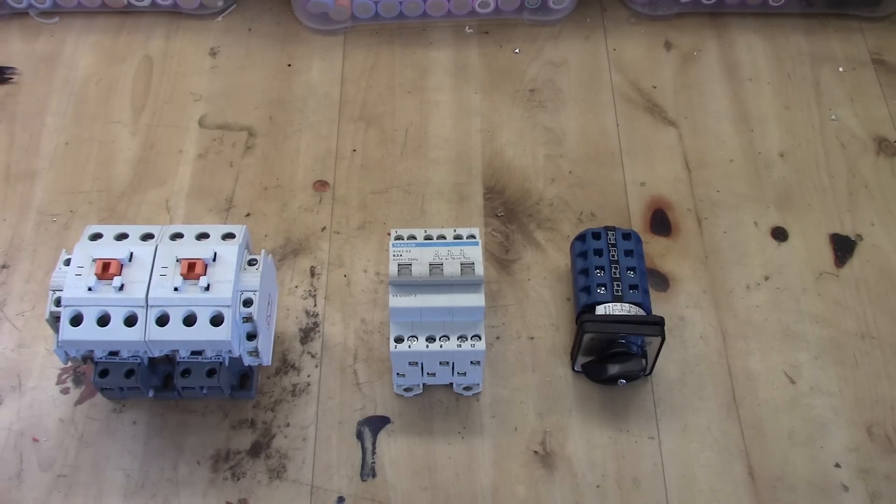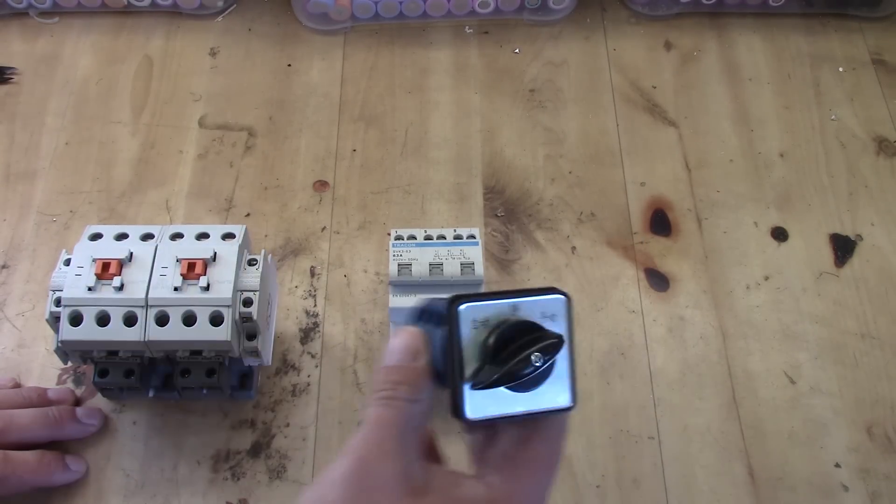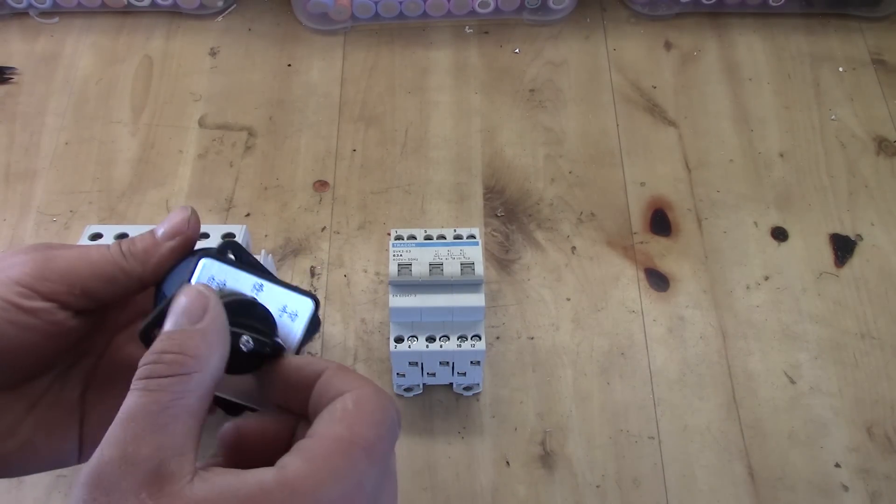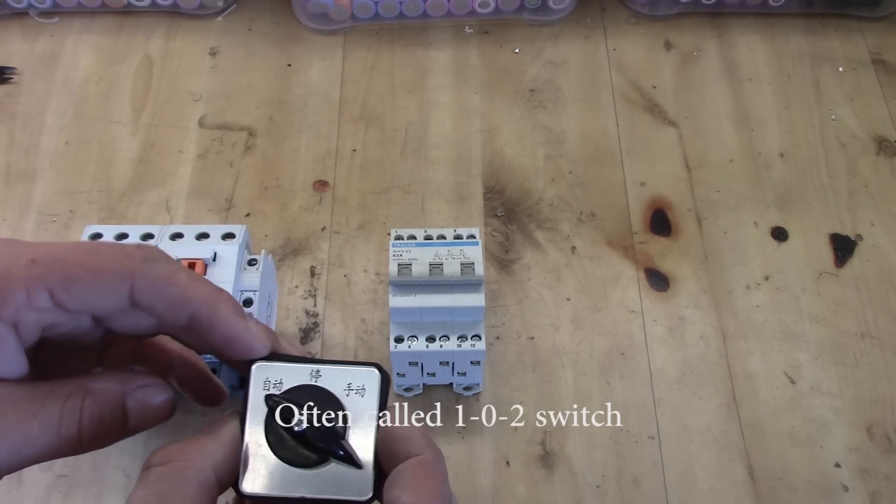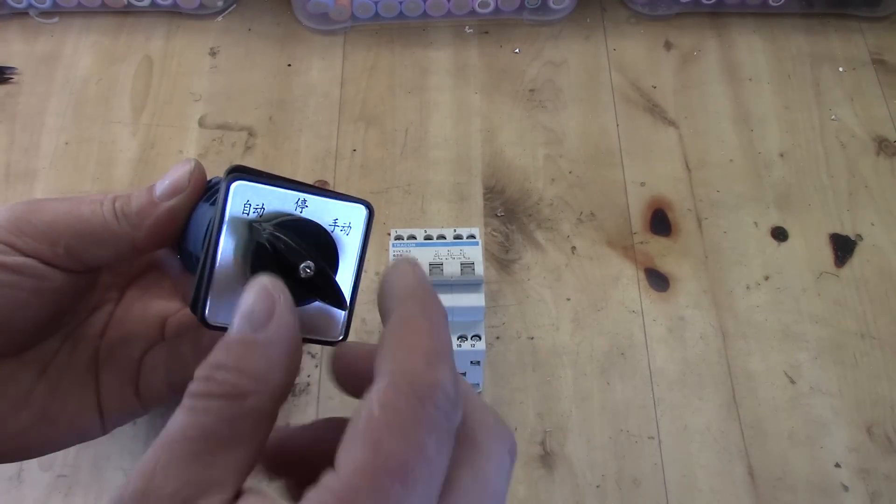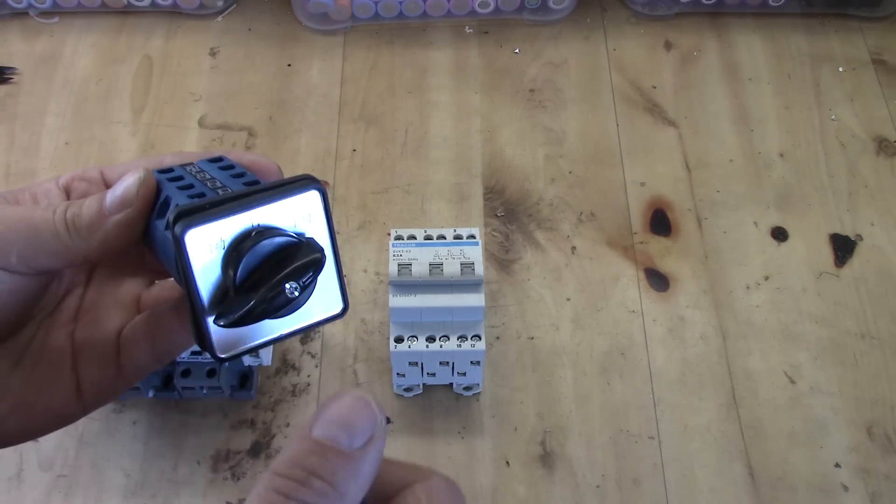There are of course a lot more of them. If we start from the right side, we have this one here. This is just a manual one, zero and two switch. Unfortunately it is in Chinese or something, but basically it switches between load one, shut off, load two.